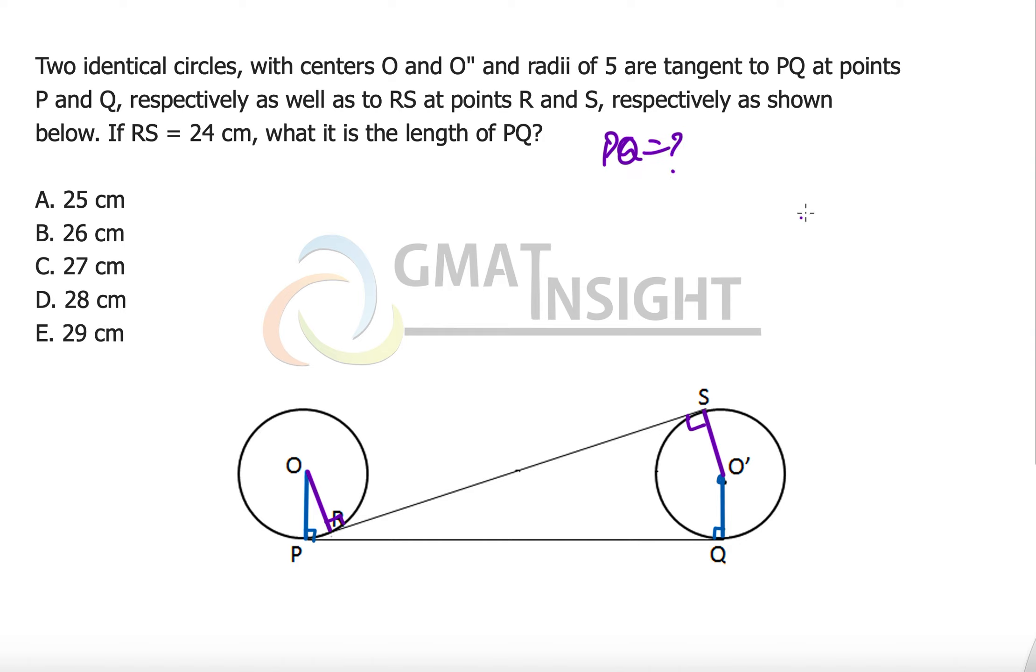PQ means the distance between the centers. So we have to find the length of PQ. With the common tangent, the very first and very important construction is to join the centers. So I'm just quickly going to do that. The distance between OO dash is also going to be the distance between PQ.